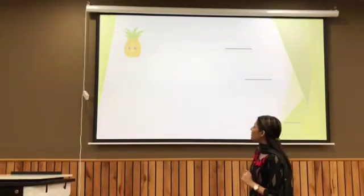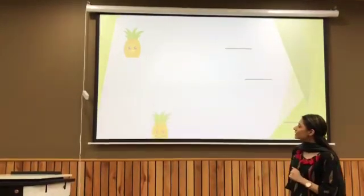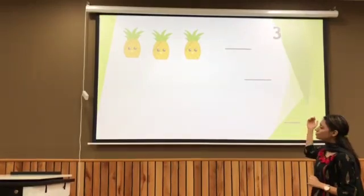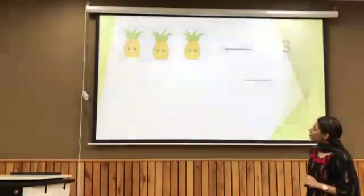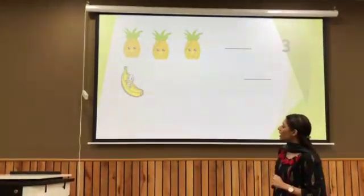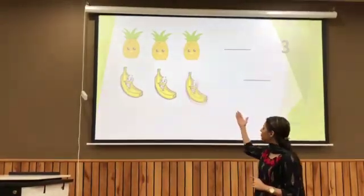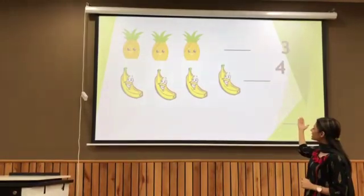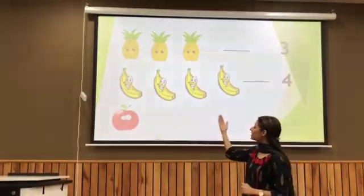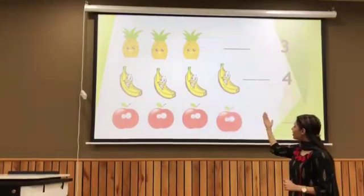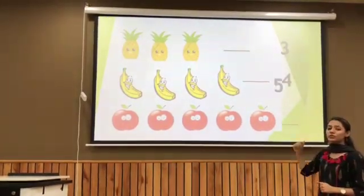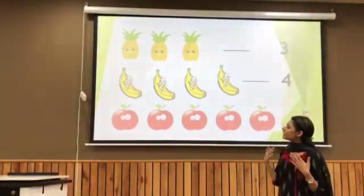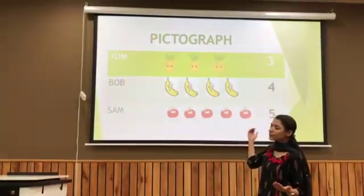Tom went to buy pineapples: one, two and three. So, he has in total three pineapples. Bob went to buy bananas: one, two, three and four — in total four bananas. And Sam: one, two, three, four and five — in total five apples. Let us now represent this on a pictograph.